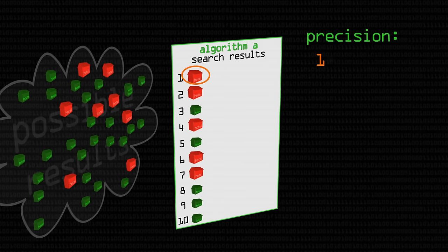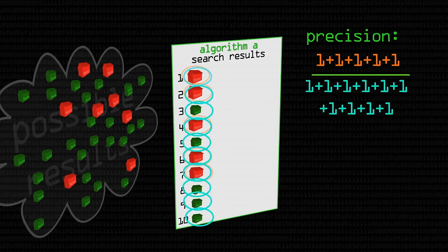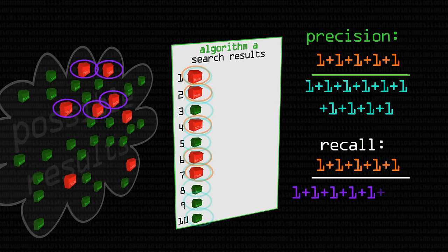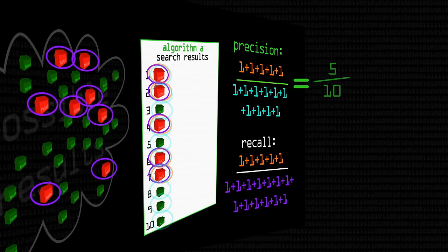So in order to compare all of these different algorithms we produce to make our search engine better what we want is a nice score to be able to say what we've done. So a score for precision is the number of results that you returned which were relevant divided by the overall number of results that you returned so this would be five divided by ten. If you want a score for recall then what you're doing is taking the number of relevant results you returned divided by the total number you could have returned which is five divided by thirteen.